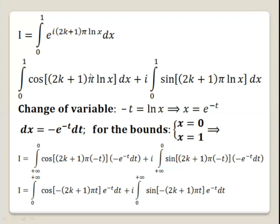We take ln x equal to minus t, so x equals e to the power minus t. Taking the derivative of both sides, dx equals minus e to the power minus t dt. For the new bounds: when x equals 0, t equals minus ln 0, which is plus infinity; when x equals 1, t equals minus ln 1, which is 0.